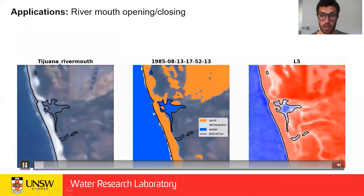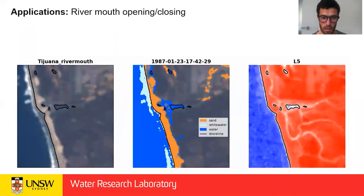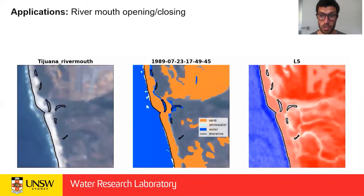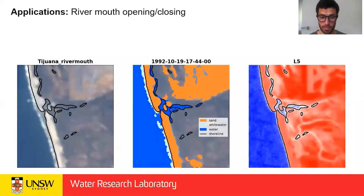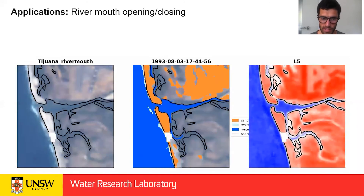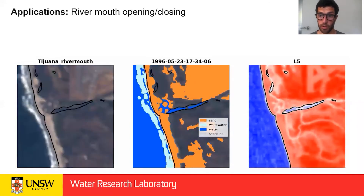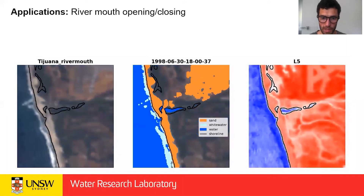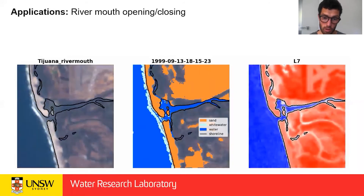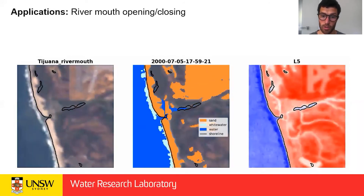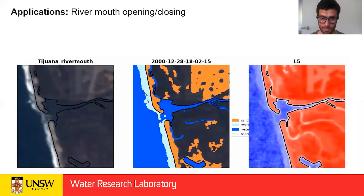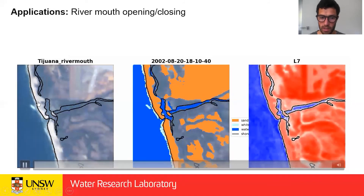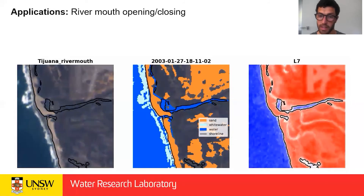Another application is river mouth opening and closing. As you can see in this animation, we're able to track the location of the river mouth and whether it's open or closed. This is the Tijuana River mouth, just at the border with Mexico in Southern California. From this animation, you can see how the location of the opening has been translating towards the south over time — it started about here and is slowly migrating southward.